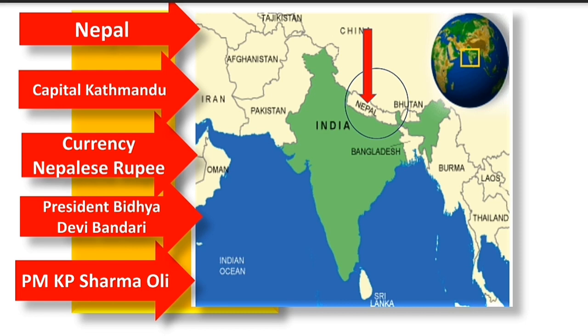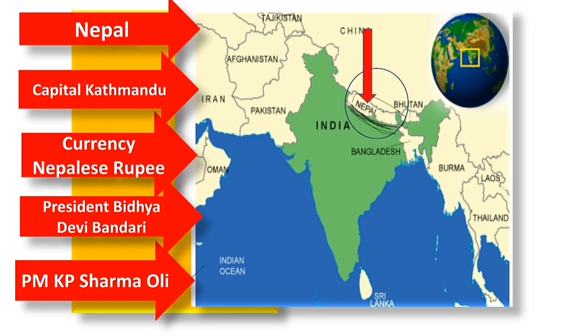Nepal's President is Bidhya Devi Bhandari and Prime Minister is K.P. Sharma Oli. Nepal's border touches India on the north side. Recently, India and Nepal have had border issues. India's border with Nepal is visible on the world map.